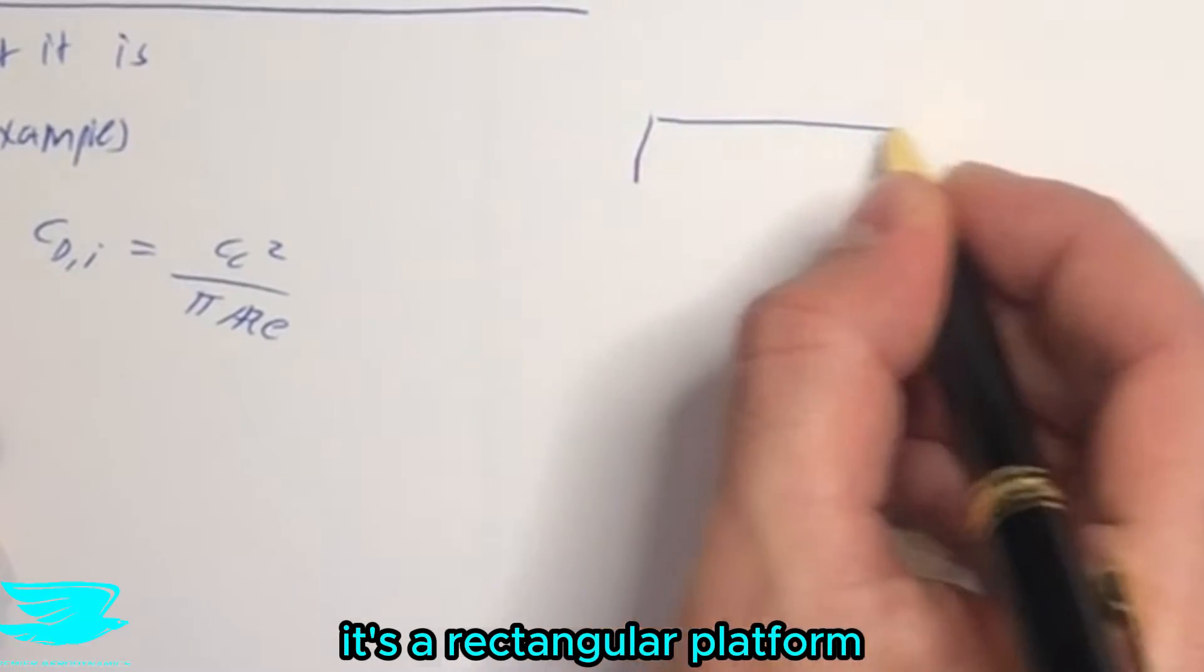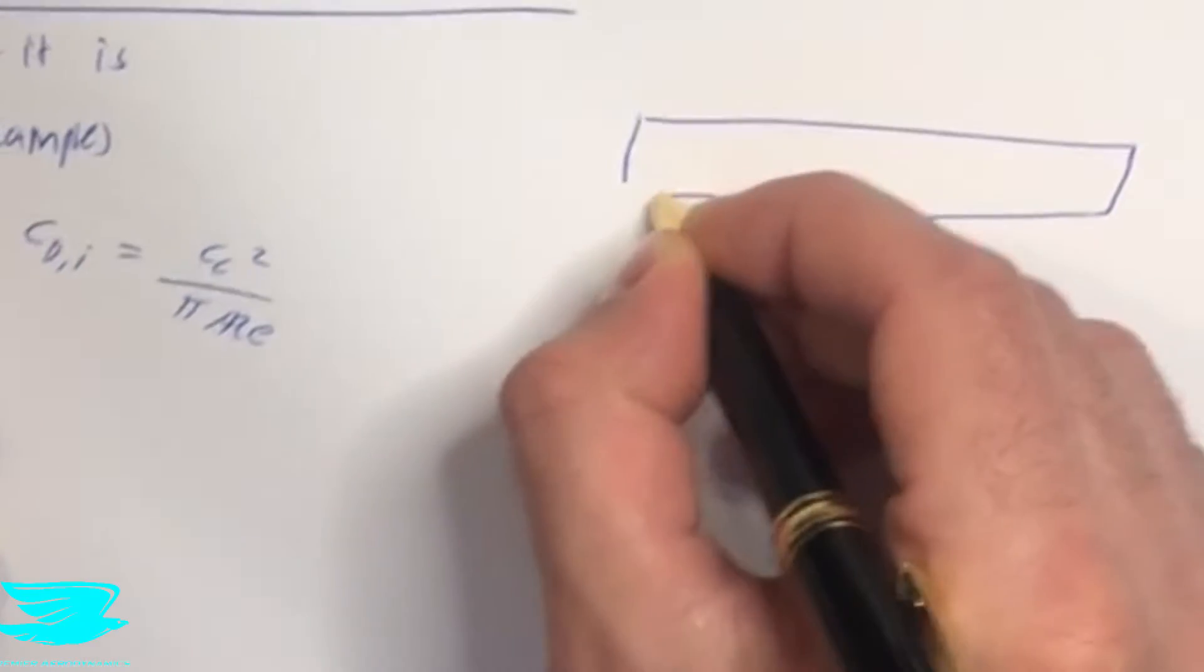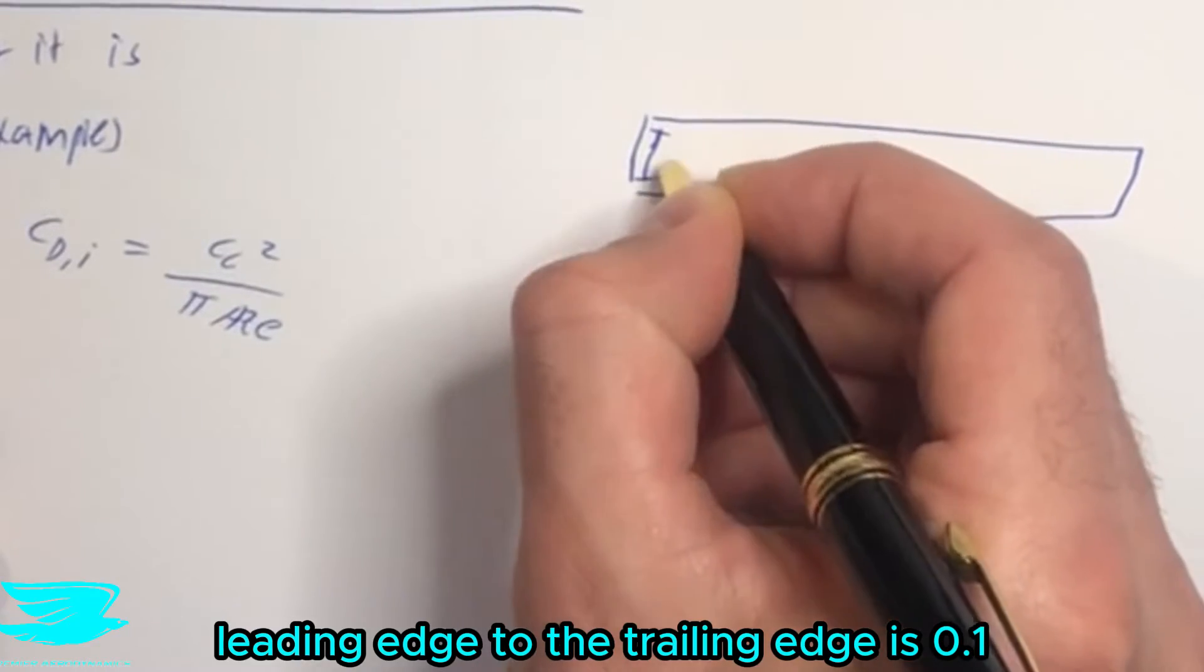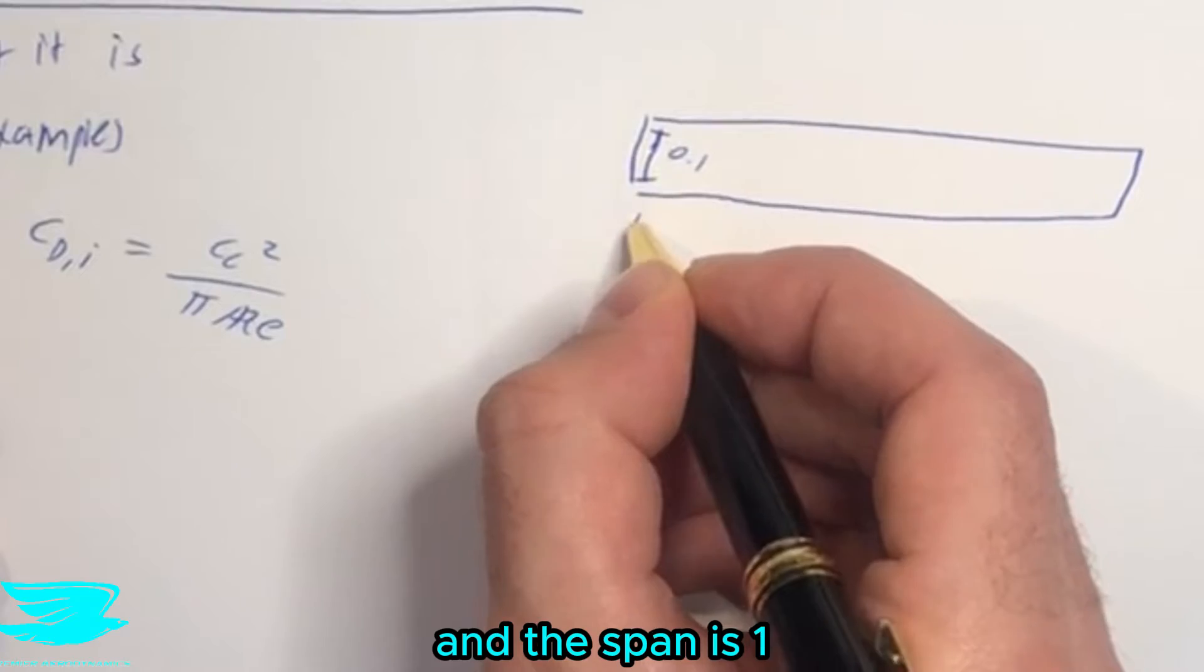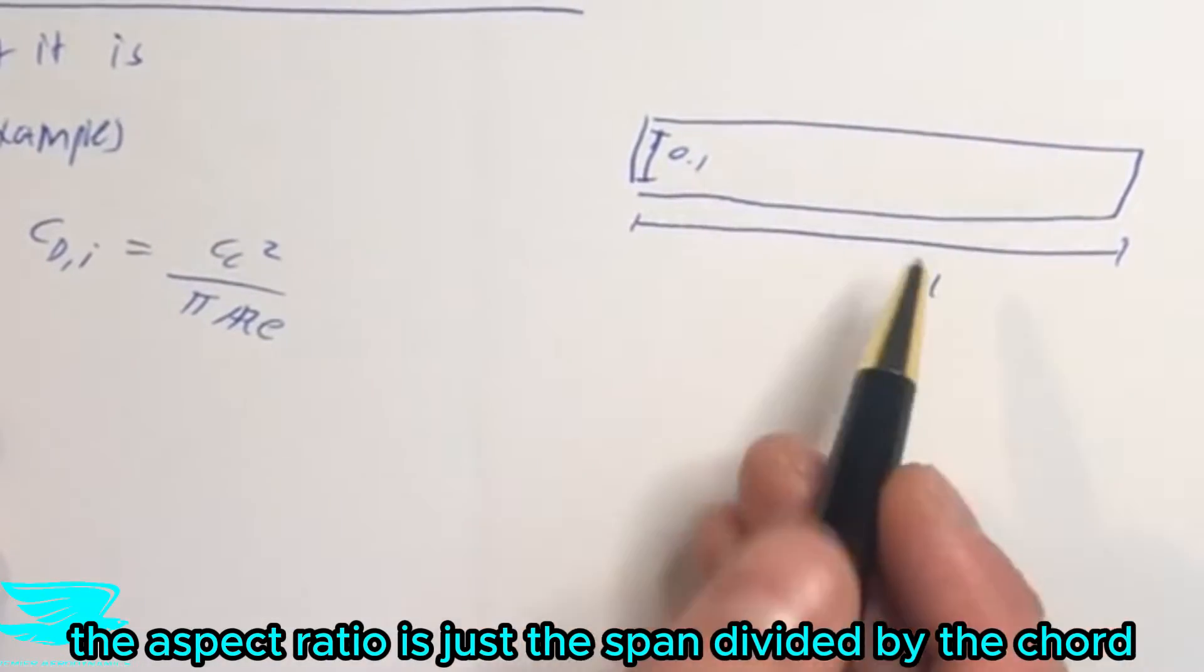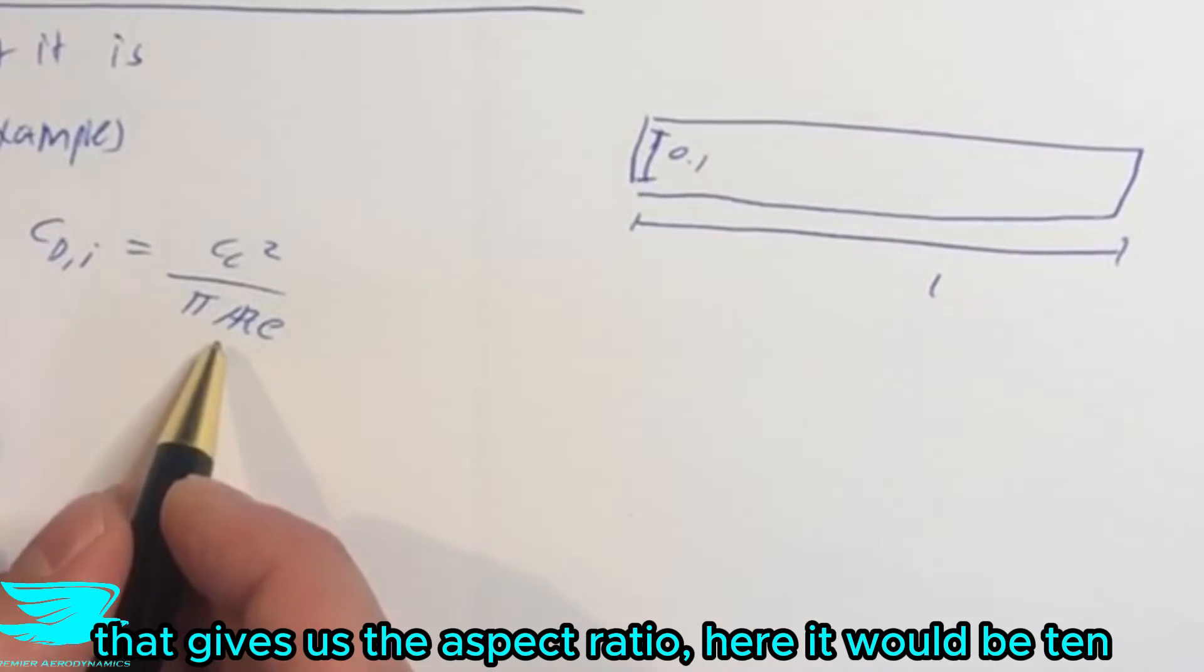So let's say we have a wing that looks like this, it's rectangular in planform. And the distance from the leading edge to the trailing edge is 0.1. And the span is 1, the aspect ratio is just the span divided by the chord, which is 1 divided by 0.1.